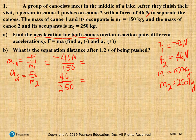Calculating the results: acceleration one equals negative 0.31 meters per second squared, and acceleration two equals positive 0.18 meters per second squared.